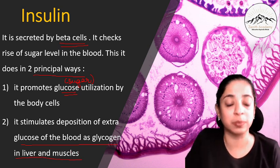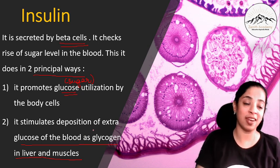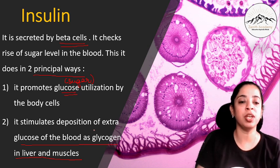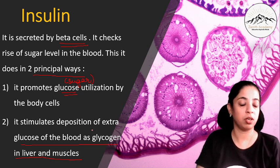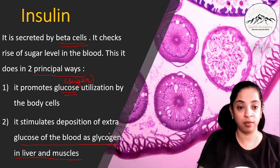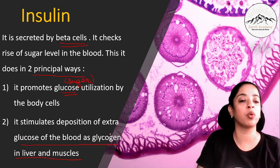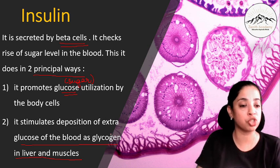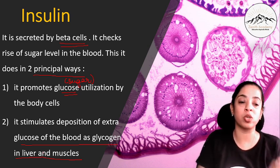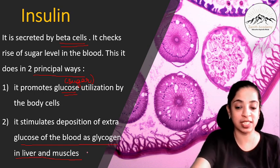The second way insulin works: it stimulates the deposition of extra glucose from the blood as glycogen in the liver and the muscles. Whatever extra glucose is there in the blood, it stimulates its conversion to glycogen and then stores it or deposits it in the liver and in the muscles.